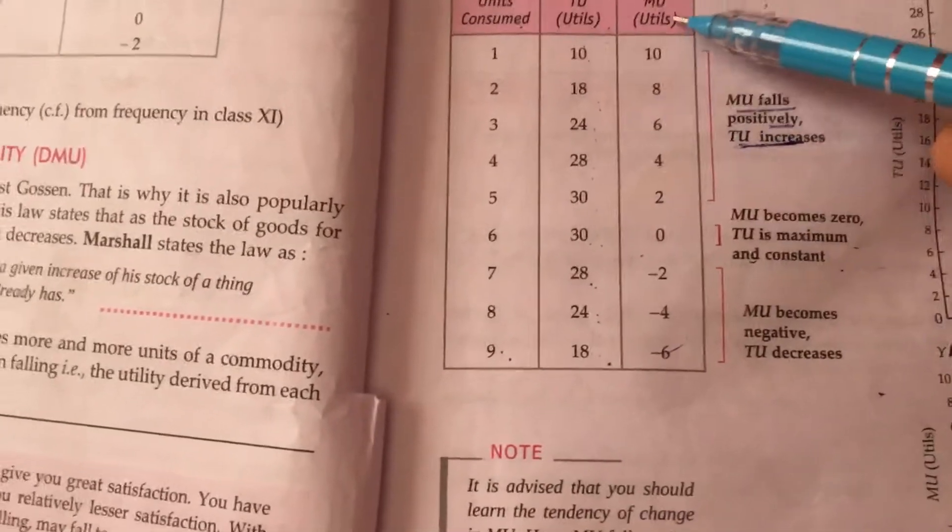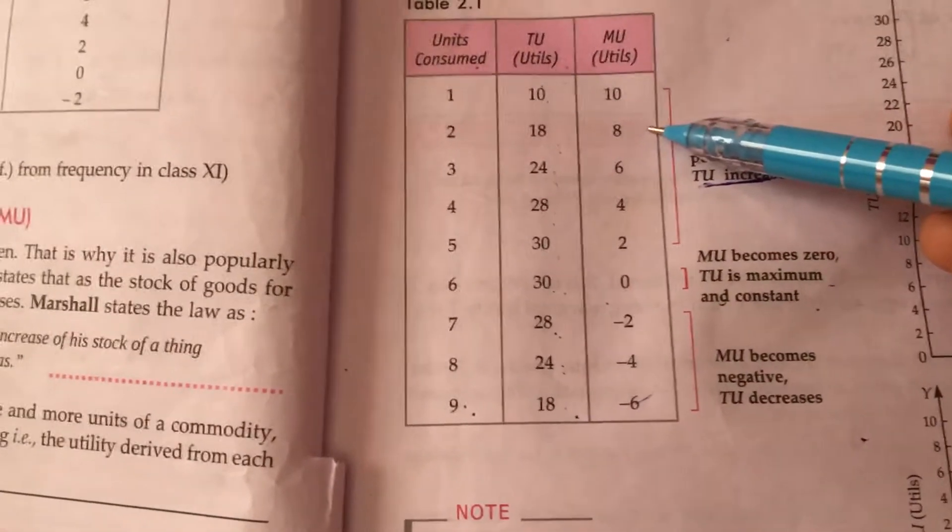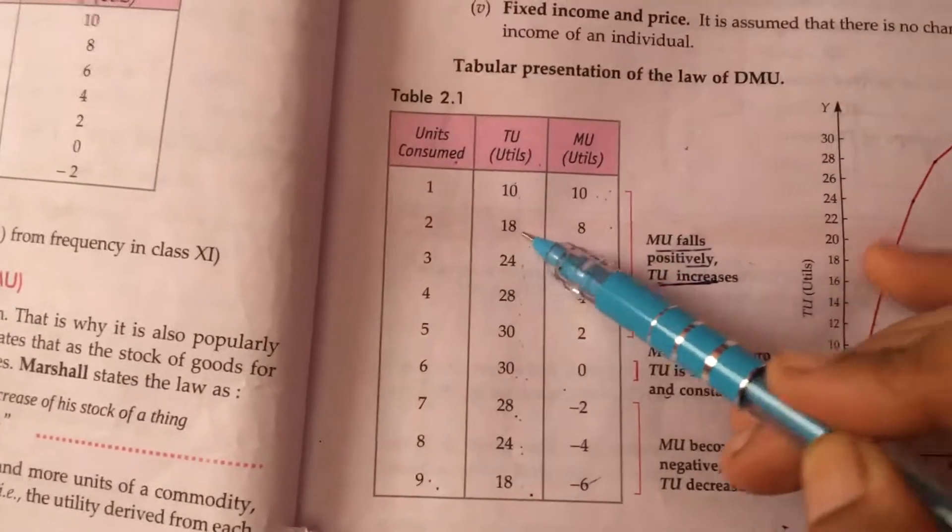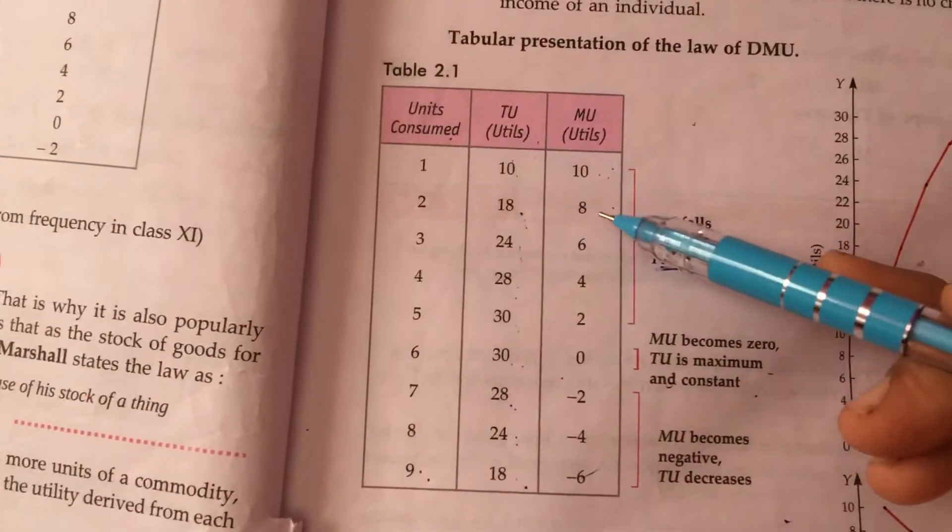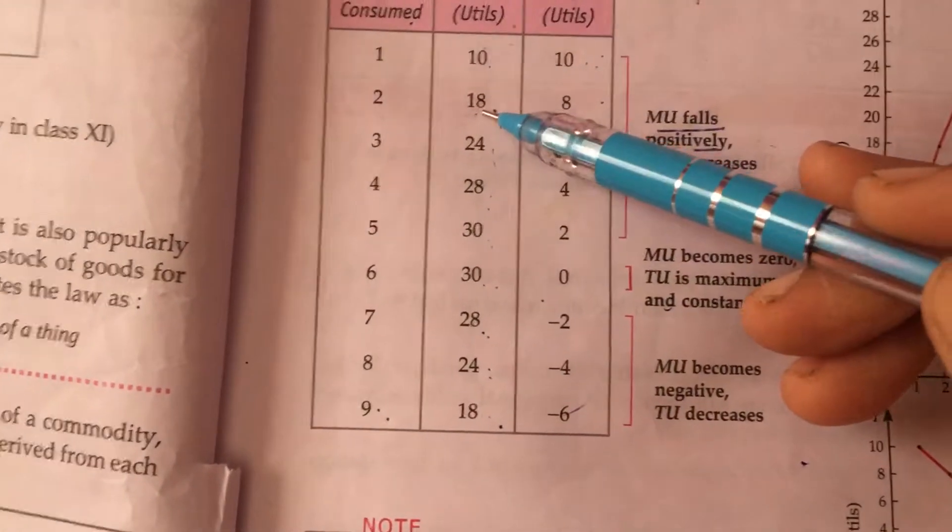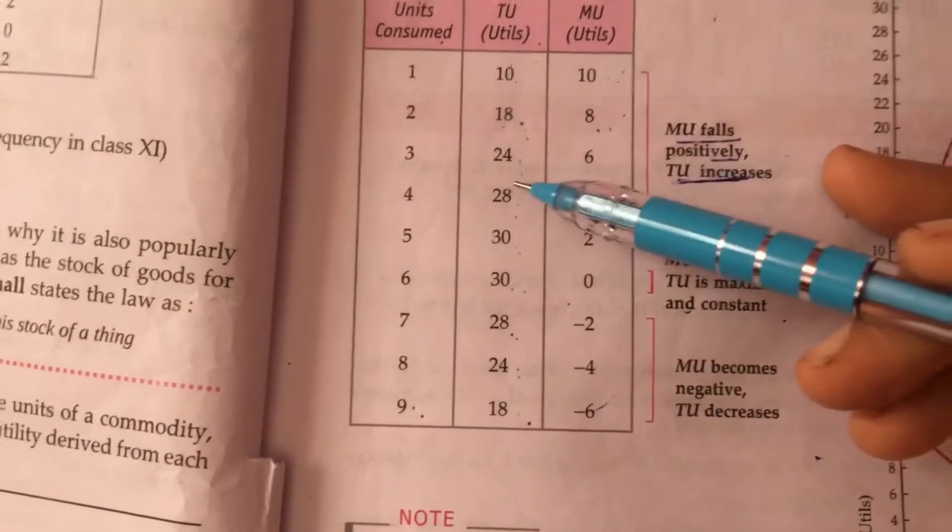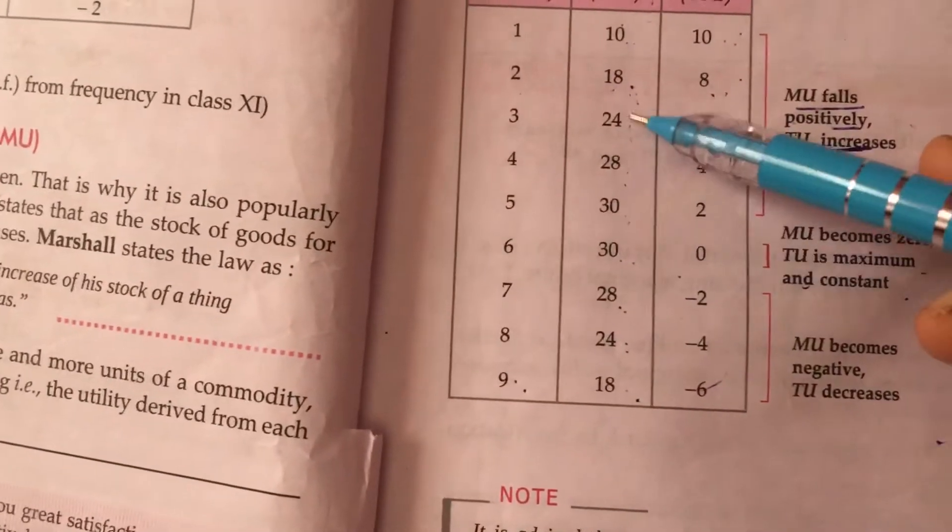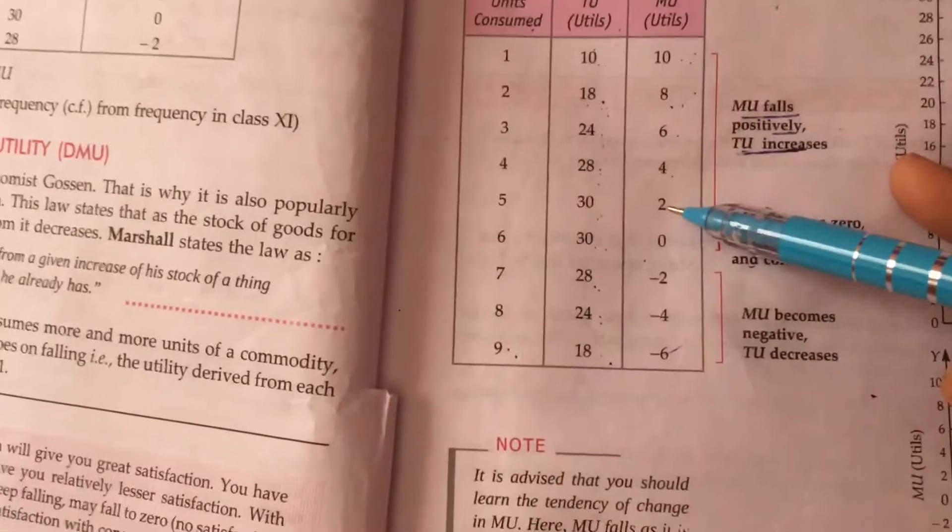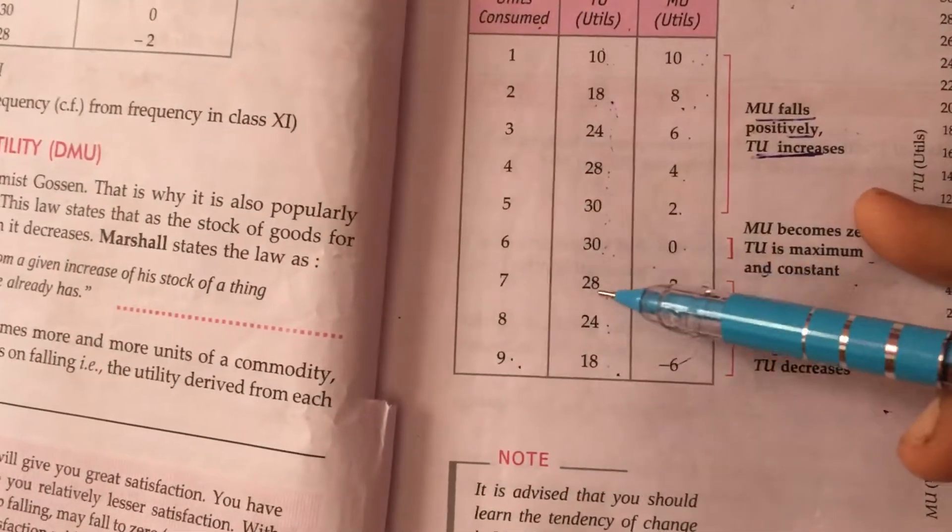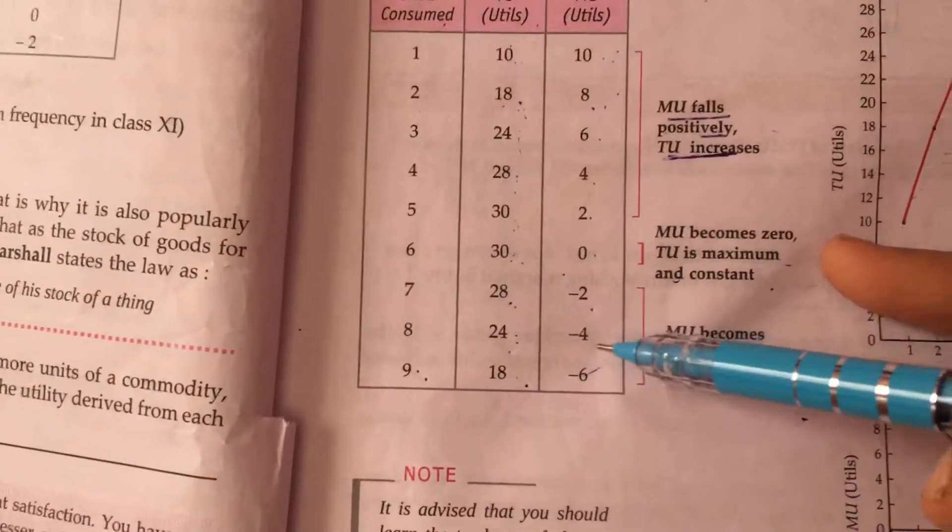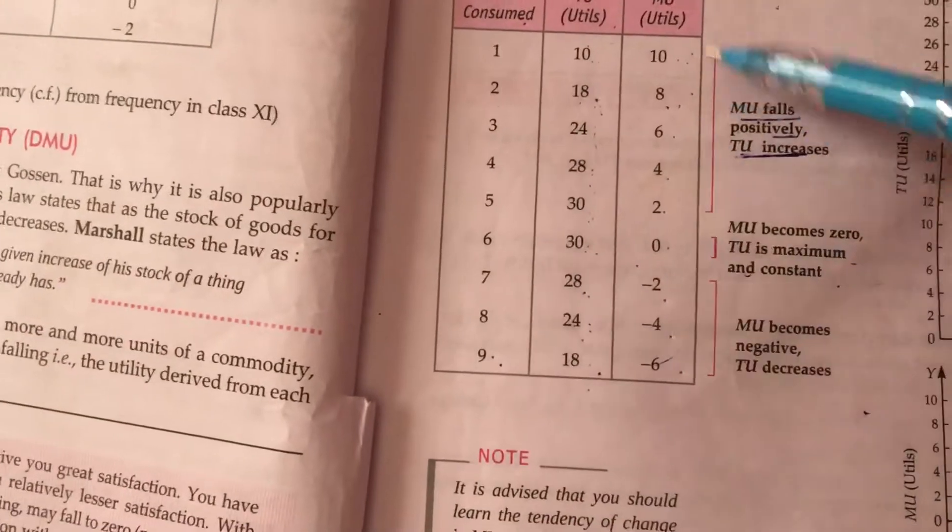Now, this is the total utility base. We have to calculate marginal utility. First utility, the marginal utility is 10. 18 and 10 difference is 8, because the difference which you are getting, 18 minus 10, you will get 8. 24 minus 18, you will get 6. 28 minus 24, you will get 4. 30 minus 28, you will get 2. 30 minus 30, you will get 0. 30 minus 28, you will get minus 2. 28 minus 24, you will get minus 4. 24 minus 18, you will get 6.